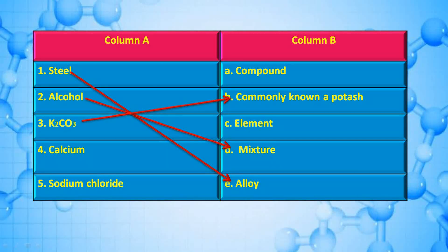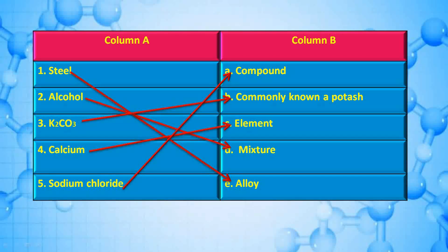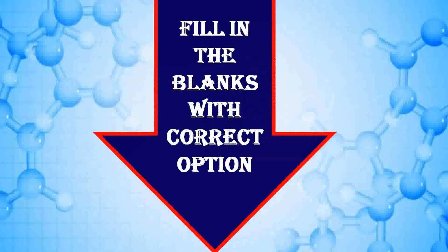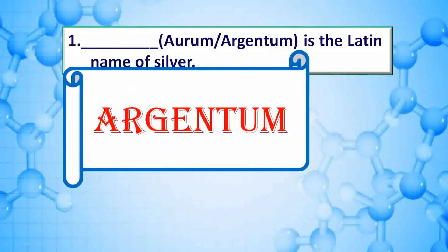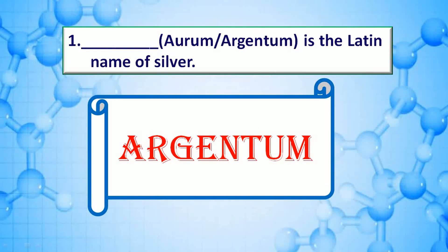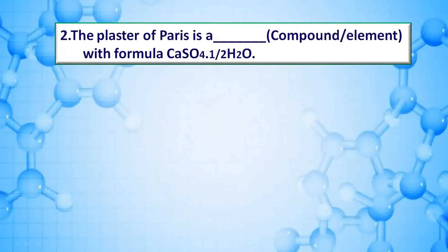Fill in the blanks with the correct option. The Latin name of silver — answer is argentum. The plaster of paris has the formula CaSO₄·½H₂O — answer is compound.